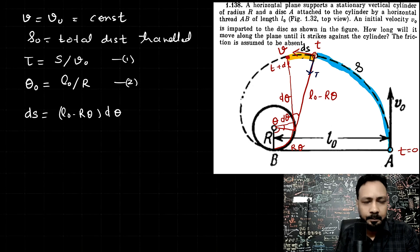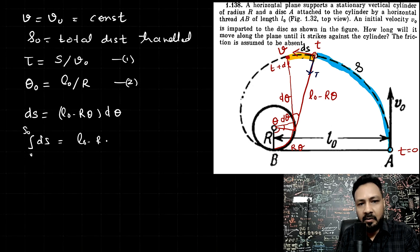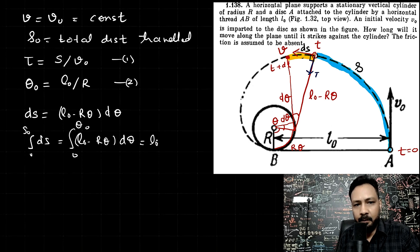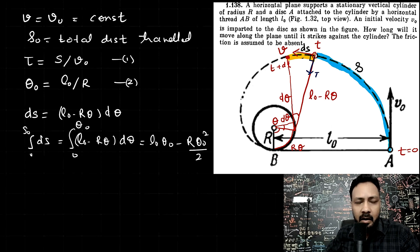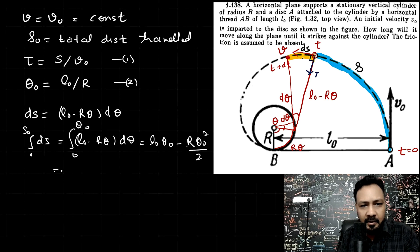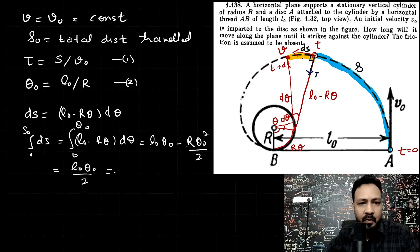Integrate this whole thing, you will get S. So S is S0 or S naught. So just integrate it, ds from 0 to S naught. And this is L naught minus R theta d theta. The whole integration will go from theta 0 to all that angle theta naught. And this integration is going to give you L naught theta naught minus R theta naught square by 2. And you see that R theta naught is L naught, so this is basically L naught theta naught by 2 and put back the value of theta naught.